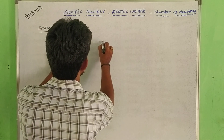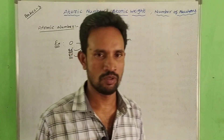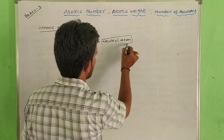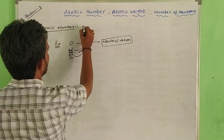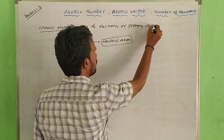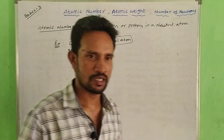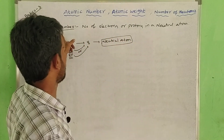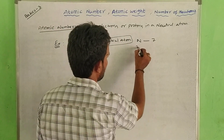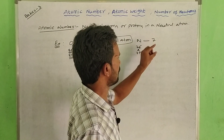Number of electrons in a neutral atom. So, atomic number is the number of electrons and protons in a neutral atom. For example, nitrogen is a neutral atom with atomic number 7 — it contains 7 electrons and 7 protons. So atomic number 7 indicates the number of electrons.